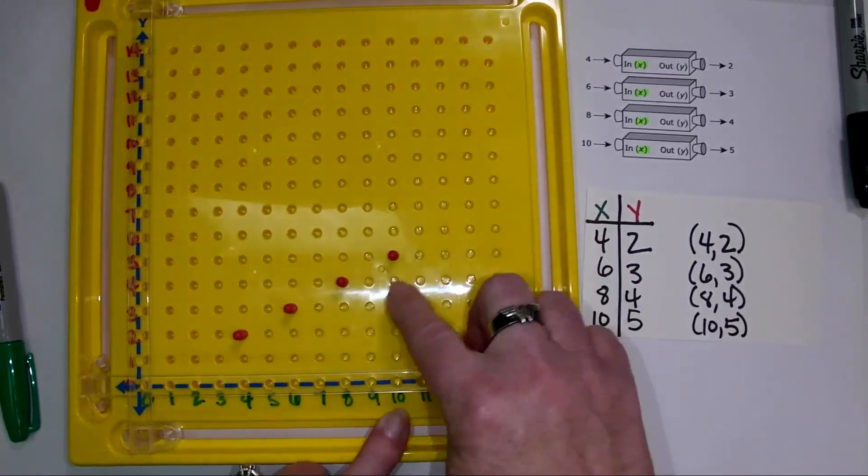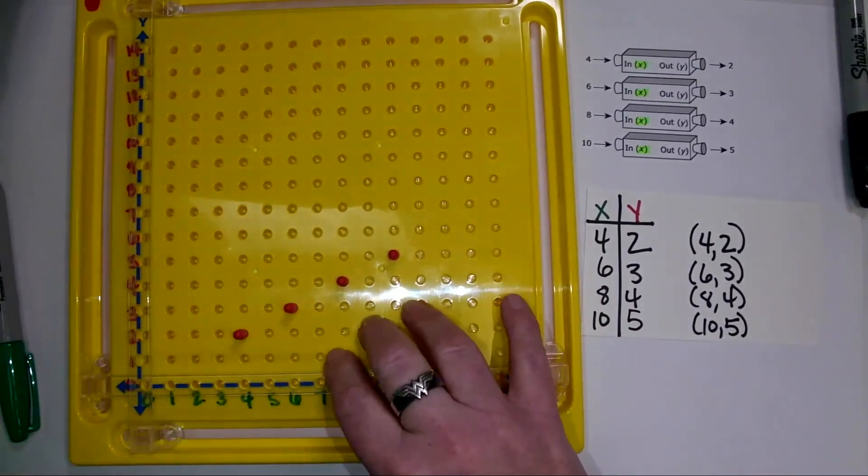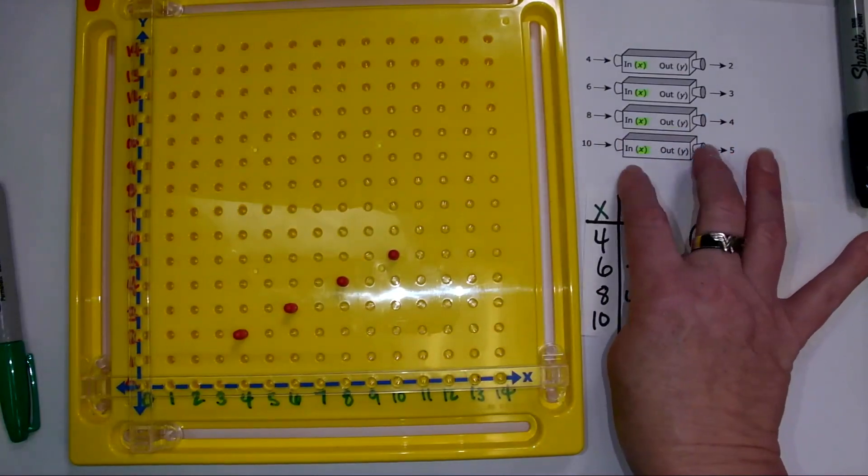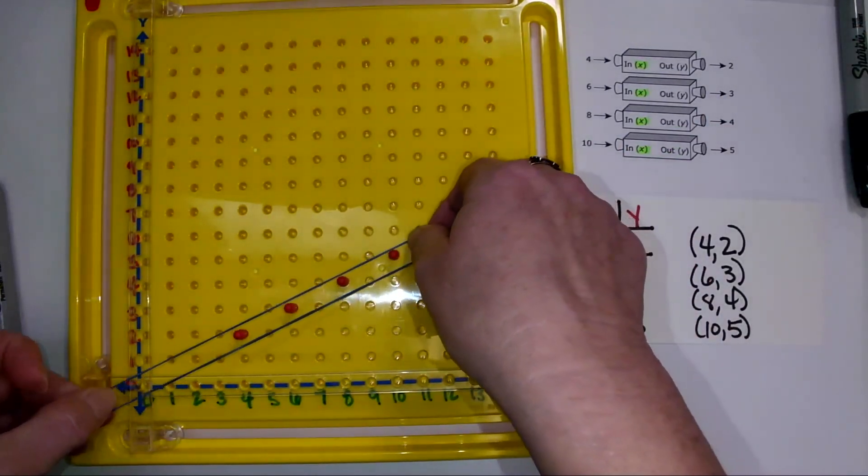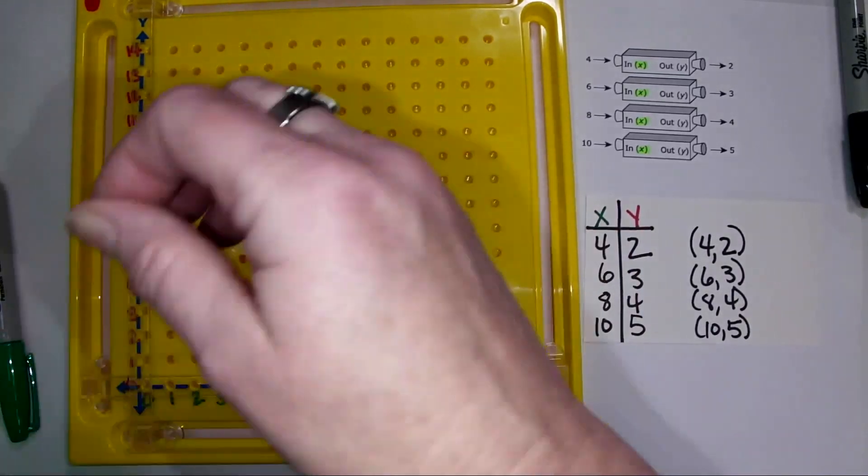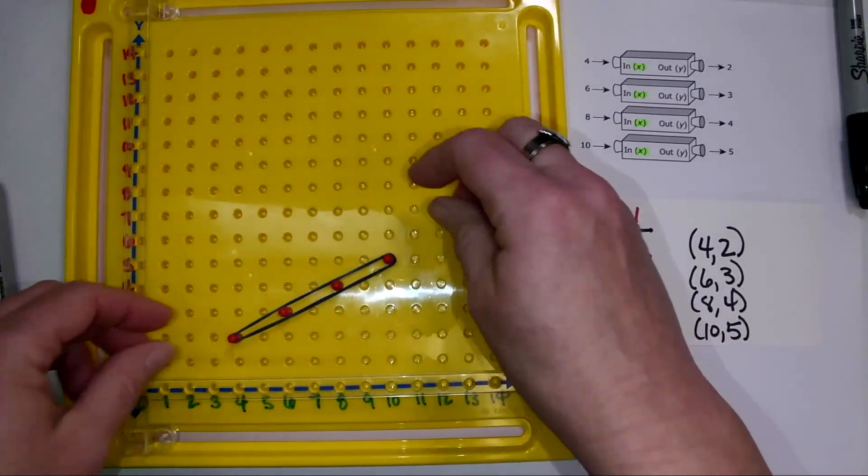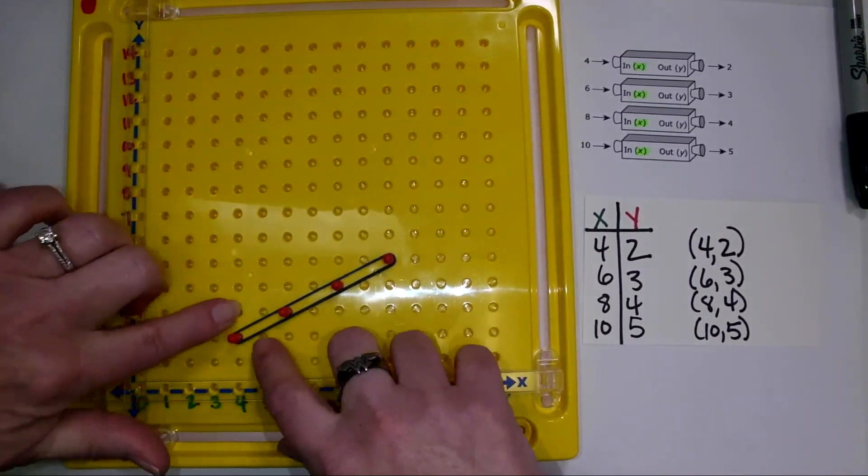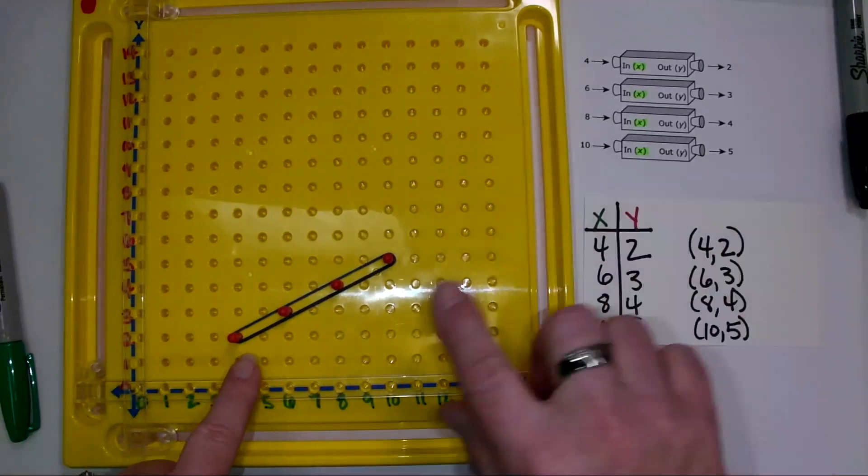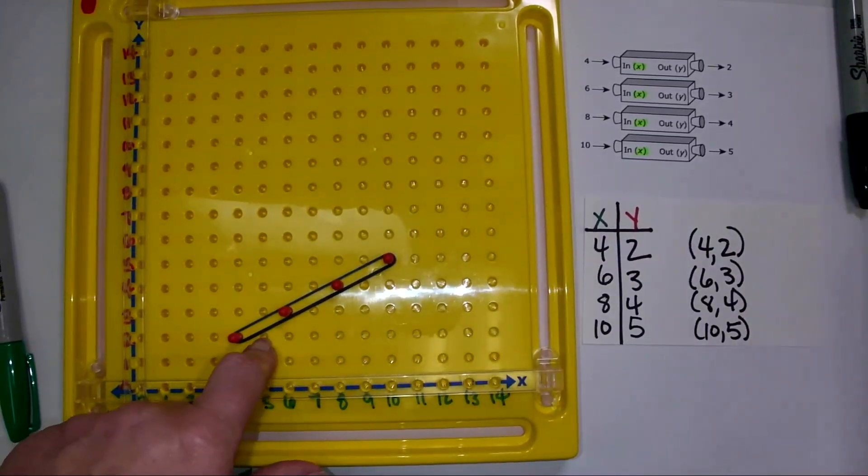And one thing I really want my students to notice when I have an input-output machine that's following a rule, that that is going to make a line. And that's going to be pretty important for them to remember. And I'm going to show you why you always want to be pointing out that that makes a line.